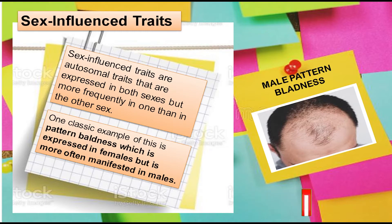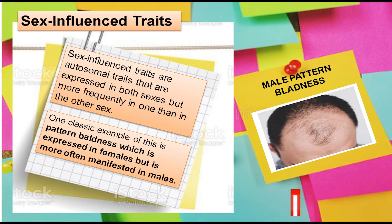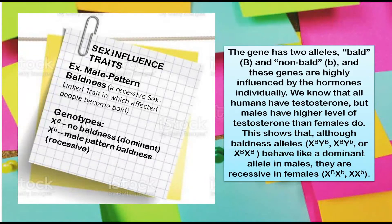Sex-influenced traits are autosomal traits that are expressed in both sexes but more frequently in one than in the other sex. One classic example is pattern baldness, which is expressed in females but is more often manifested in males. The gene has two alleles: bald (capital letter B) and non-bald (small letter b). These genes are highly influenced by hormones individually.